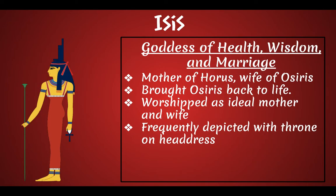Isis is a goddess of health, wisdom, and marriage, and she's the mother of Horus. She's the wife of Osiris, also the sister of Osiris. She brought Osiris back to life after Seth had killed him. She's worshipped as the ideal mother and wife, and she's frequently depicted with a throne on her headdress because she's the queen.